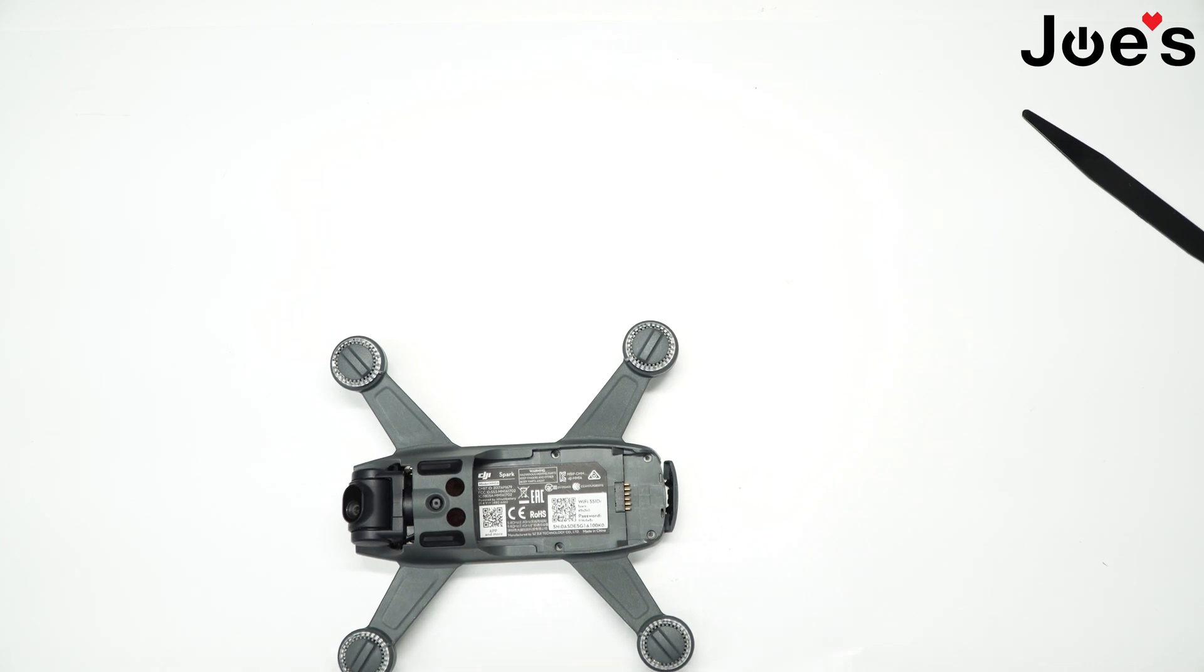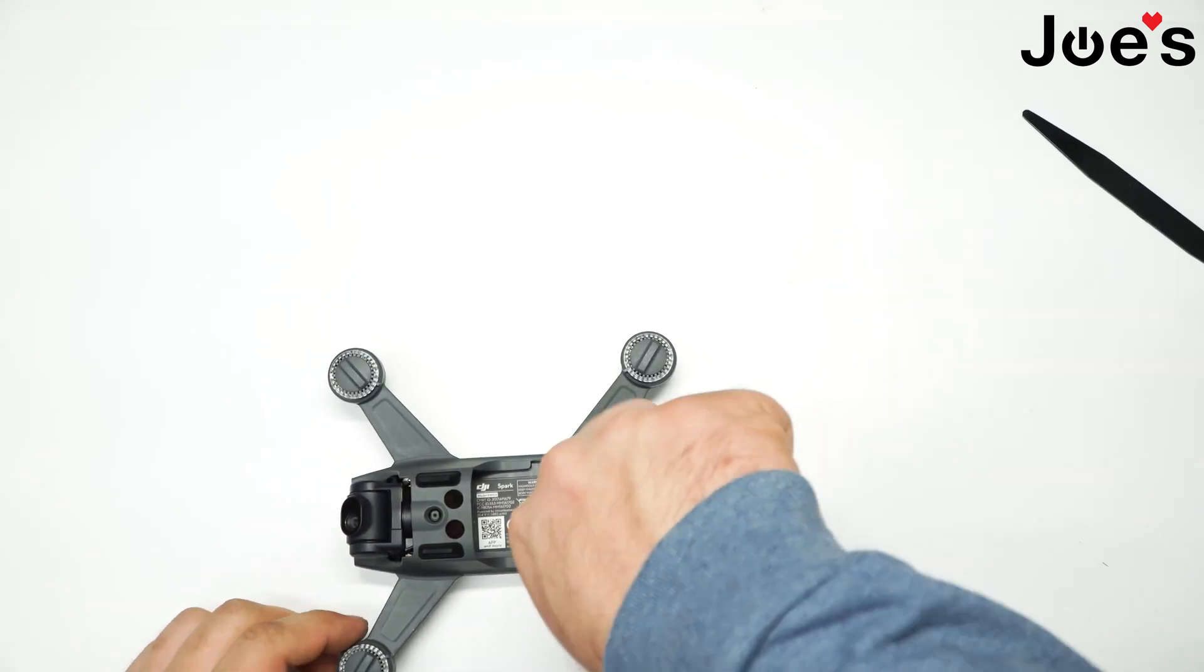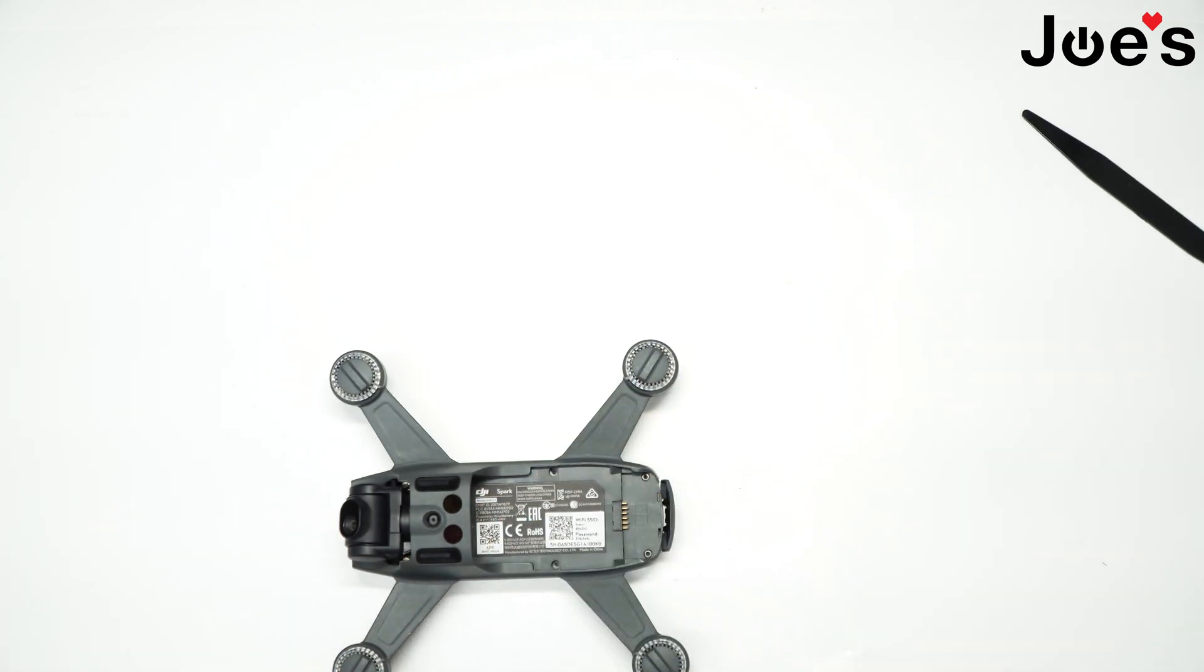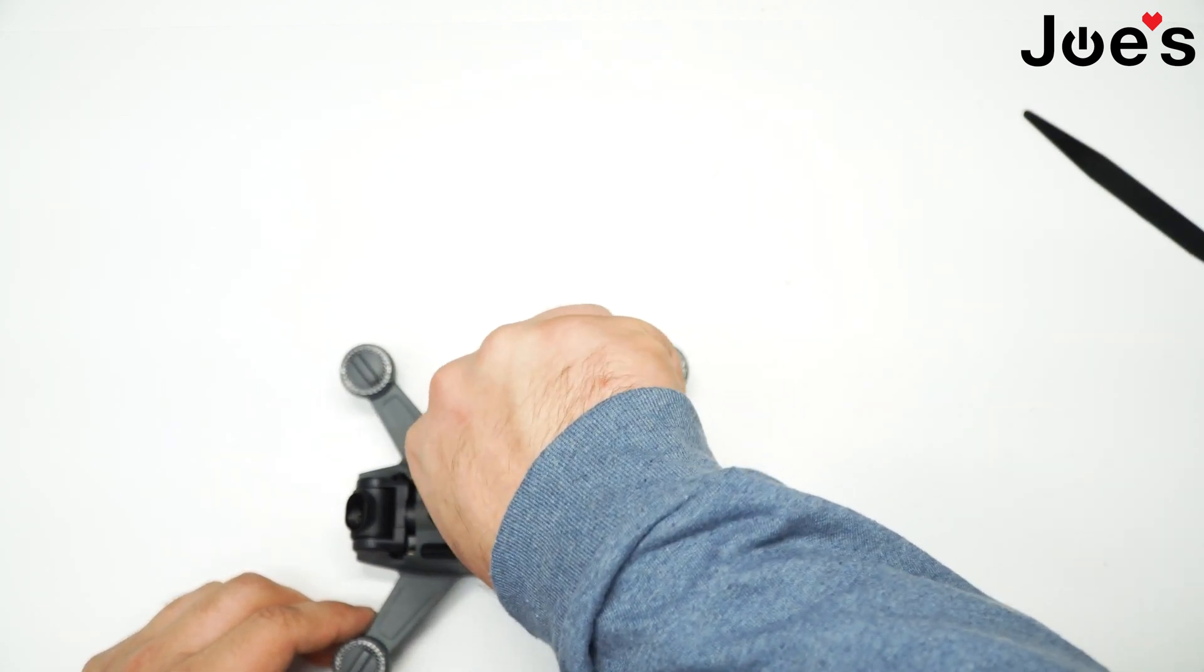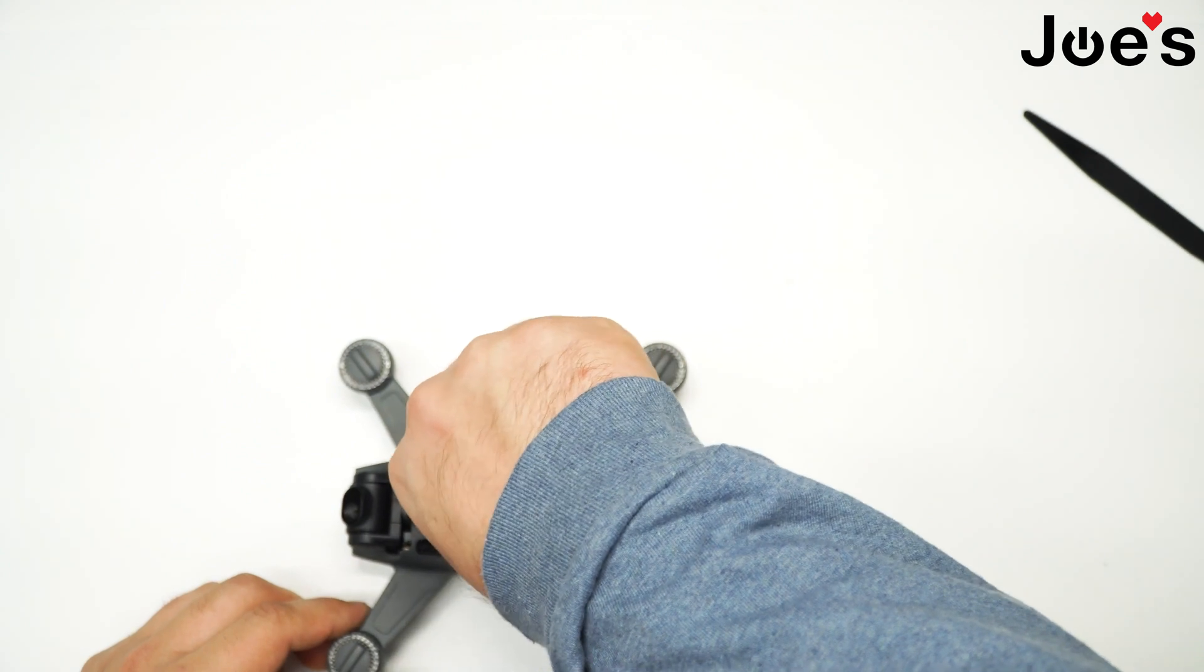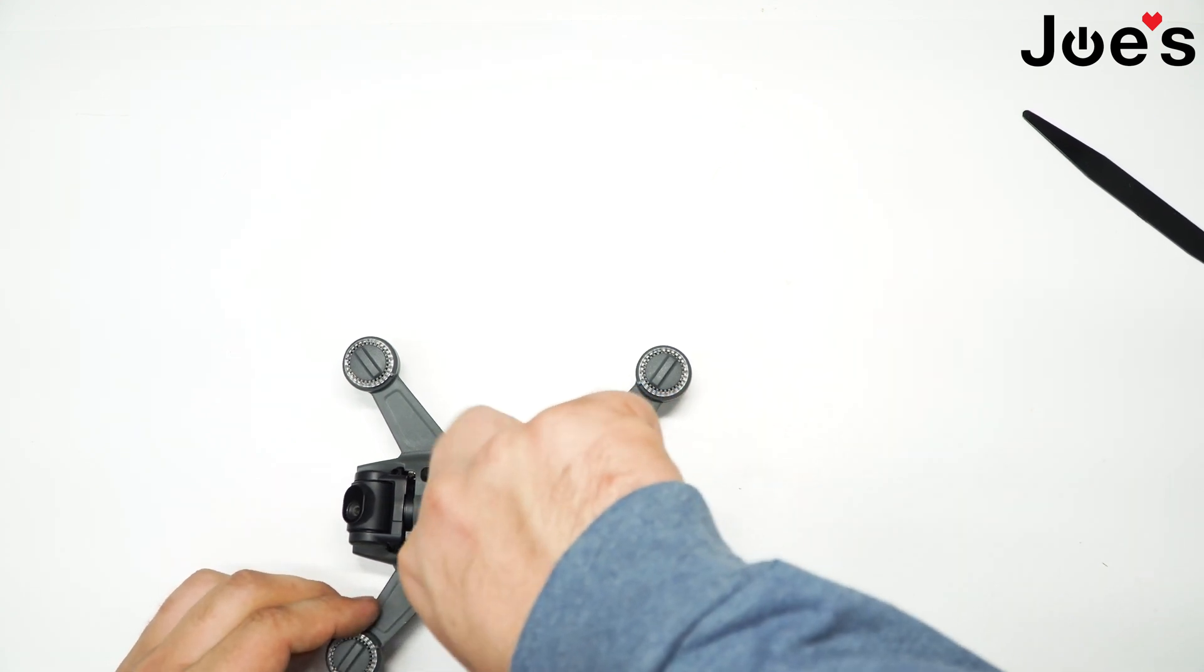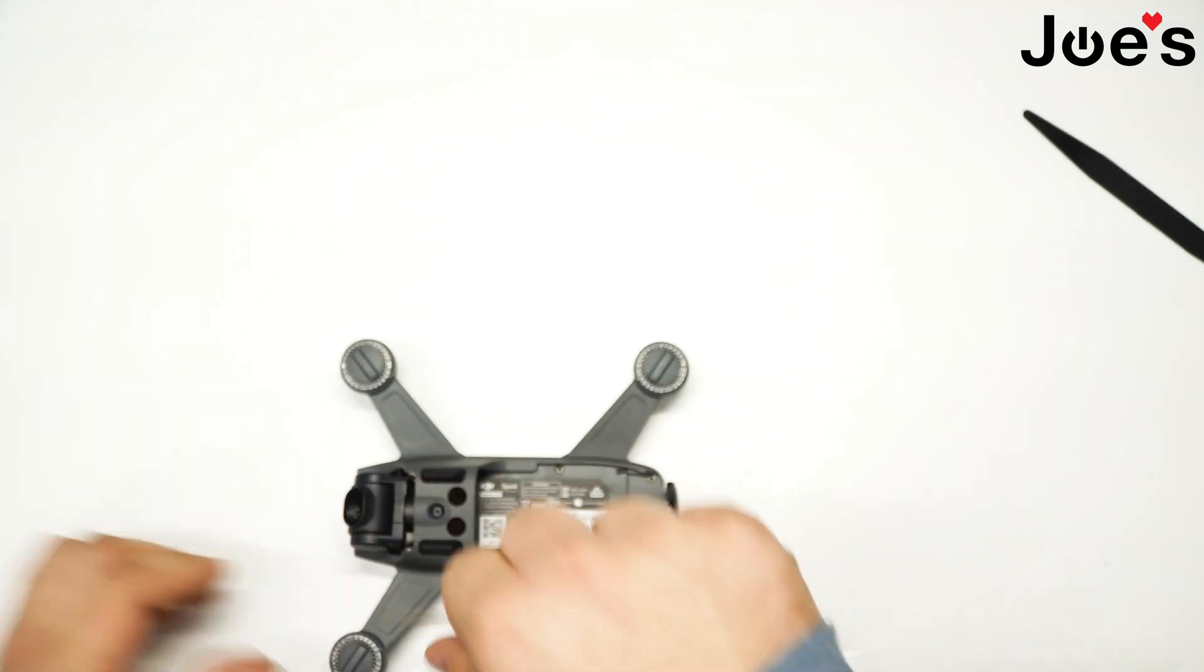Now we grab those screws we had from earlier and just put them back into their place. Again, be mindful of your torque here because you're screwing into plastic and you would not want to strip that plastic out. So just be mindful. Once it stops and seats, just give it an eighth of a turn, roughly. You just kind of feel it out. Don't over-torque because then you'll just be buying more parts.